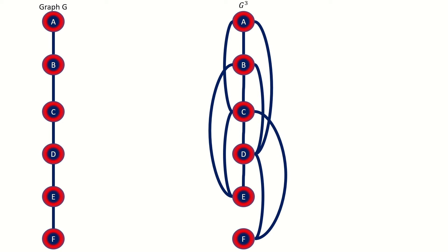On to vertex E. Vertex E had a distance of 1 to vertices F and D, meaning that it connects to those vertices in the third power graph. Vertex E also had a distance of 2 to vertex C and a distance of 3 to vertex B in the original graph, meaning that it connects to those vertices in the third power graph as well. Vertex A is too far away to connect to vertex E in the power graph, as it had a distance of 4 from vertex E.